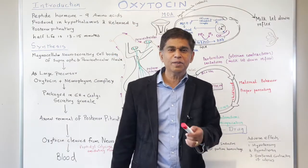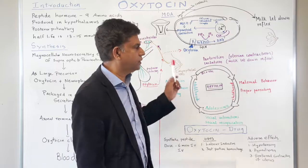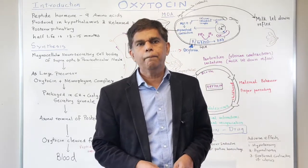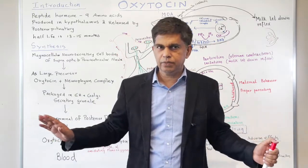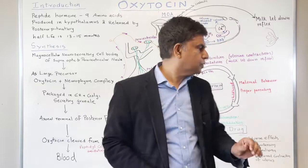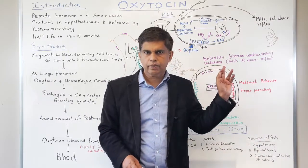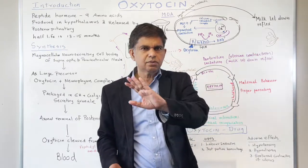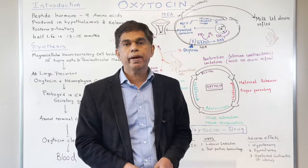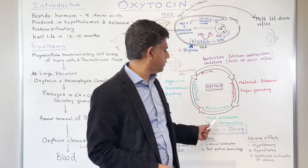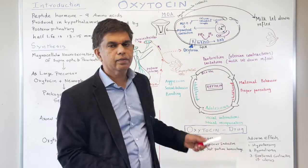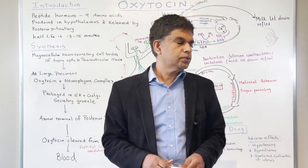Two things we need to know: the role of oxytocin in labor and delivery, and the role of oxytocin in the milk letdown reflex — very important posterior pituitary hormones. Oxytocin also plays roles across life stages: in childhood it helps with maternal behavior and proper parenting; in adolescence it supports social interaction and social recognition; in adulthood it influences aggression, sexual behavior, and bonding. That's why oxytocin is also called the love hormone.